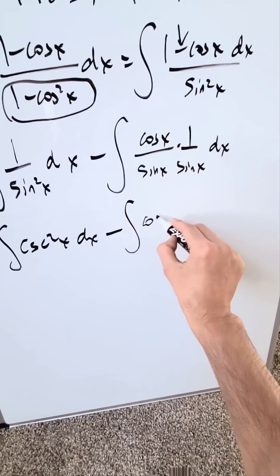Minus cotangent x plus cosecant x plus c. This right here is coming from the first integral. This here is coming from the second integral. Both of these are antiderivatives for what you see over here. This answer is correct.